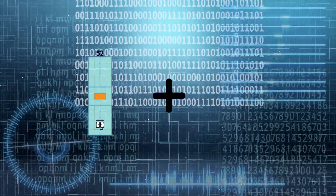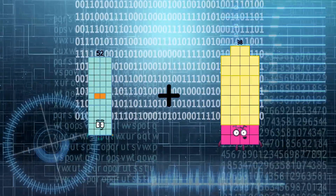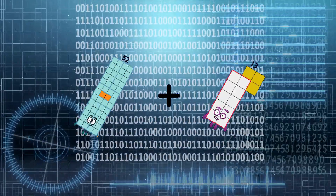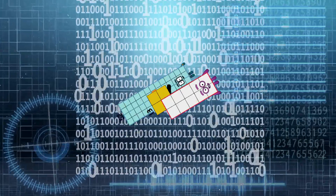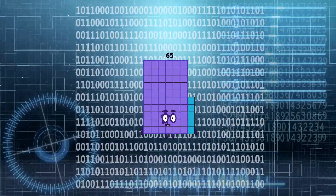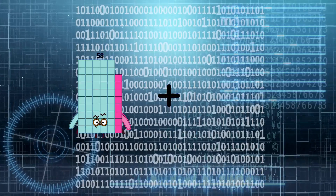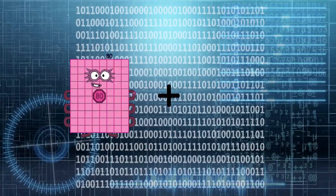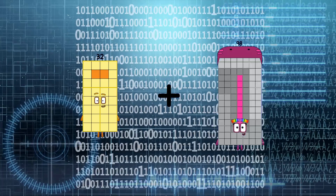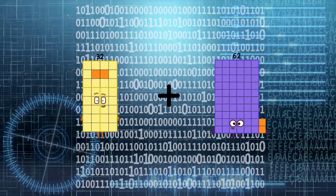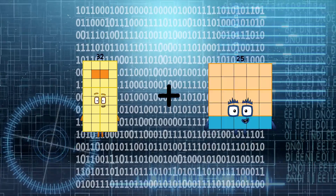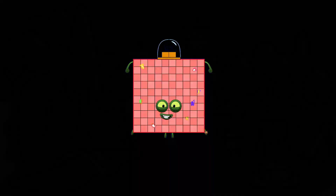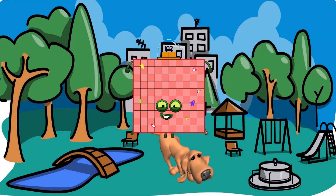52 plus 13 equals 65. 32 plus 70 equals 102.